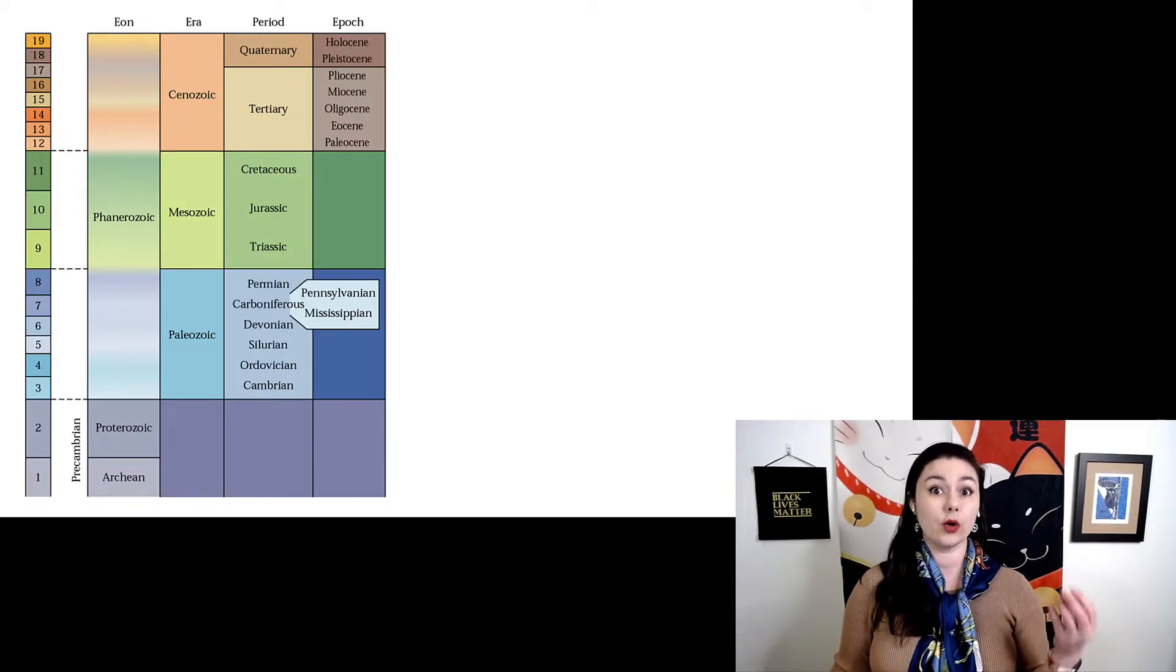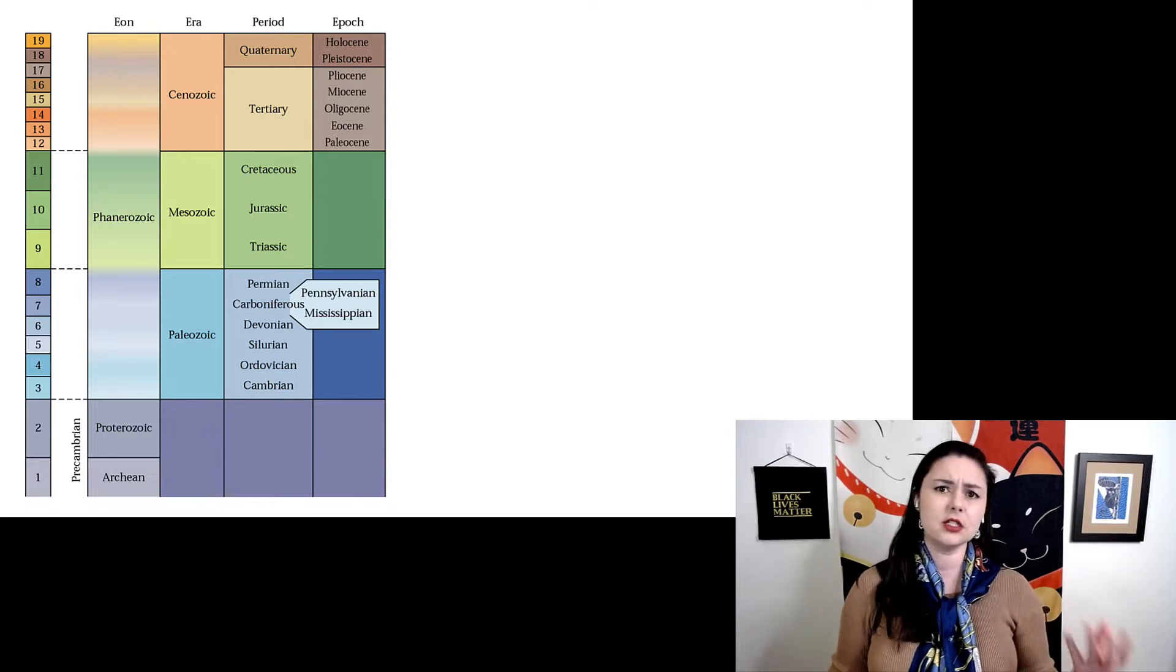Here you can see that we organize different periods of time into different lengths. Eons are pretty long periods of time, and we have eras within an eon. Within eras, we have periods, and within periods, we have epochs. But let's start close to us and work backwards in time.